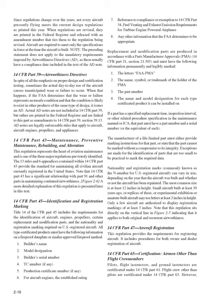14 CFR Part 45, Identification and Registration Marking. Title 14 CFR Part 45 includes requirements for the identification of aircraft, engines, propellers, certain replacement and modification parts, and the nationality and registration marking required on U.S.-registered aircraft. All type certificated products must have the following information on a fireproof data plate: builder's name, model designation, builder's serial number, TC number if any, production certificate number if any, for aircraft engines the established rating, reference to compliance or exemption to 14 CFR Part 34 (Fuel Venting and Exhaust Emission Requirements for Turbine Engine Powered Airplanes), and any other information the FAA determines appropriate.